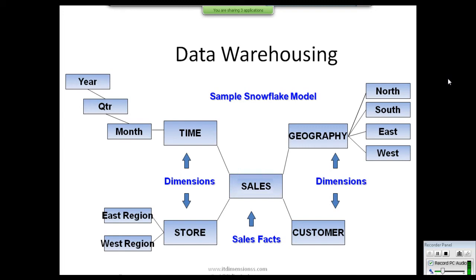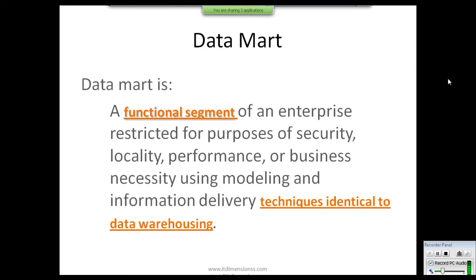In the snowflake schema, only the sales table is the fact table; all the other surrounding tables are dimension tables. Before, when you saw a database, every table was arranged according to a subject area — all production tables in the production area, all human resources tables in the human resources subject area, all sales tables in the sales subject area.